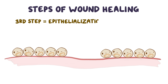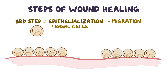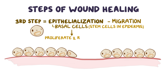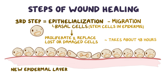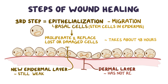The third step of wound healing is epithelialization, or migration, which is where basal cells, or the stem cells in the epidermis, start to proliferate in order to replace the lost or damaged cells. This process takes about 48 hours and ends when the epidermal layer is rejuvenated. However, this newly formed epidermal layer is still kind of weak because the strong dermal layer below hasn't yet regenerated.